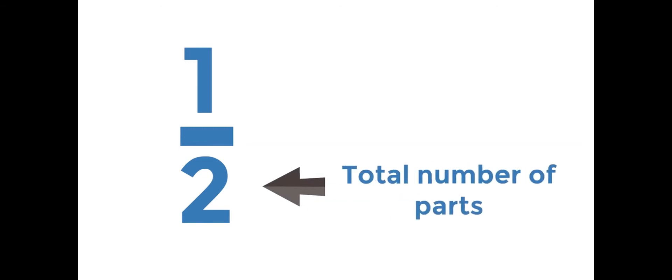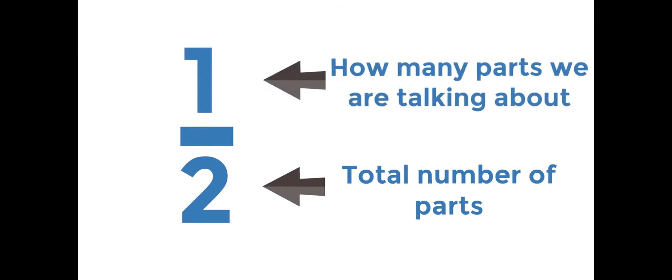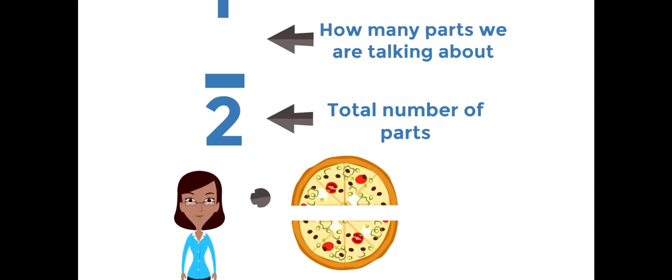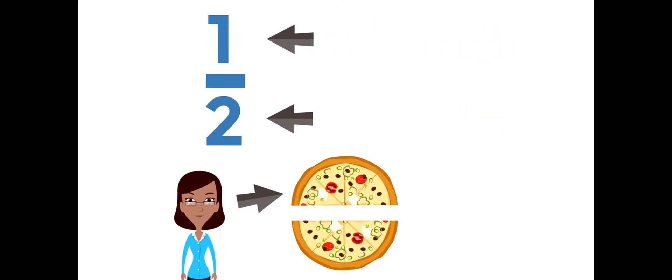You might be wondering: what do the numbers mean and how does it show one half? Well, the bottom number shows the total number of parts, and the top number shows how many parts we are talking about. Going back to our example, there are a total of two parts to the pizza, so there's a two on the bottom. And Cindy just gets one part — that's the part we're talking about — so Cindy gets just one half of the pizza.